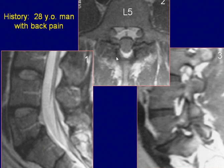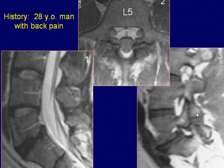Axial proton density-weighted image at the L5 level demonstrates elongation of the spinal canal in the anteroposterior direction. Sagittal T1-weighted image shows bony discontinuity of the pars interarticularis of the L5 vertebra.